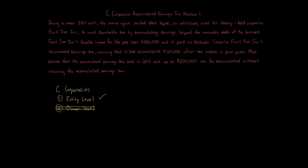The accumulated earnings tax targets businesses that have no legitimate reason for retaining earnings. In this problem, the IRS audit determined the shareholder was avoiding the second level of tax by accumulating earnings beyond the reasonable needs of the business. For example, if there's a plan where the business is saving money for expanding operations, building a factory, or technology growth, those can be legitimate reasons. But there has to be a legitimate reason for retaining all those earnings and not paying them out to owners.